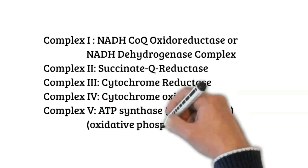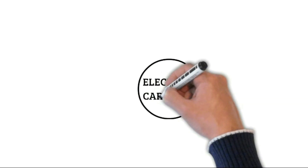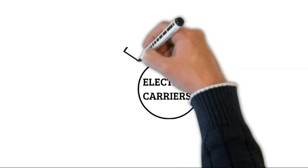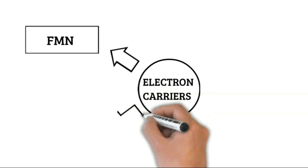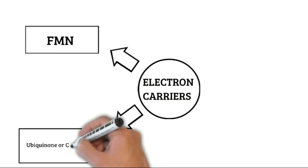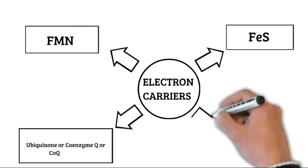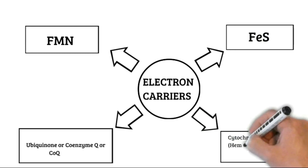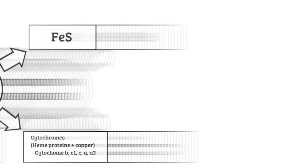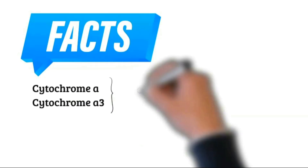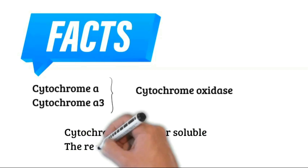In the electron transport chain, electrons are transported from NADH to a chain of electron carriers. These electron carriers are flavin mononucleotide (FMN), ubiquinone or coenzyme Q (CoQ), FES protein, and cytochromes — which are heme proteins — and copper. These are cytochrome B, C1, C, A, and A3. Cytochrome A and A3 constitute what is called cytochrome oxidase. Cytochrome C is water soluble, while the rest are lipid soluble.